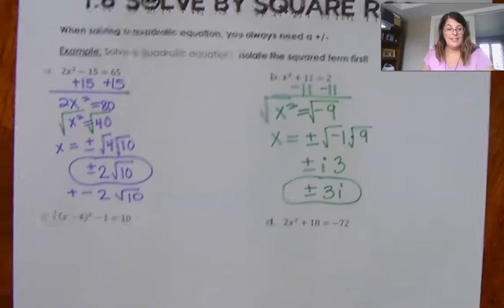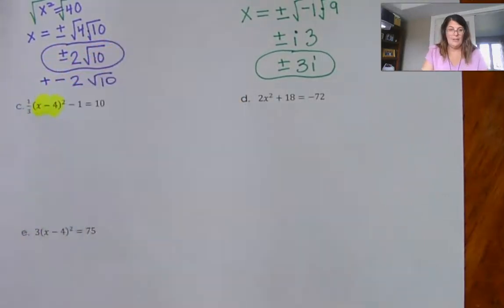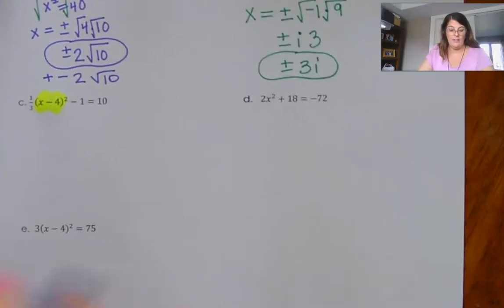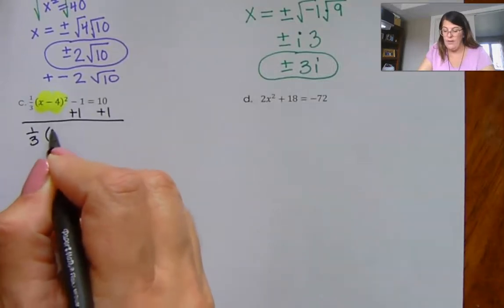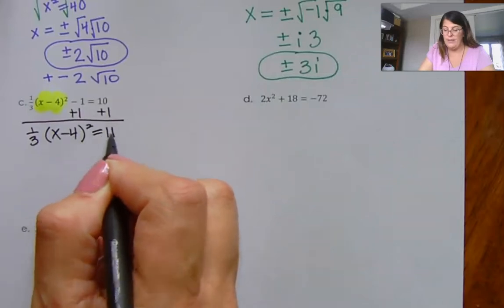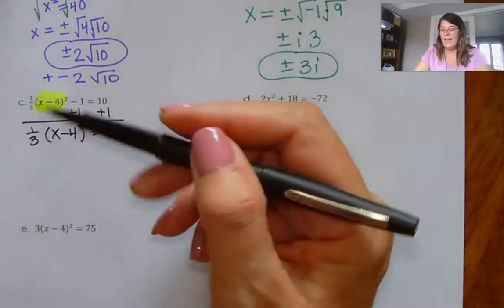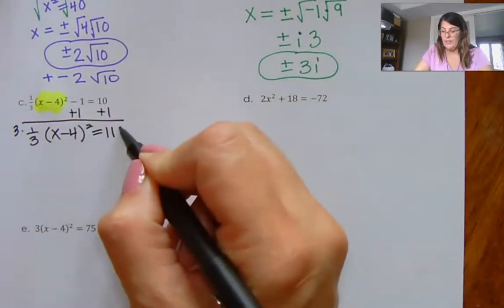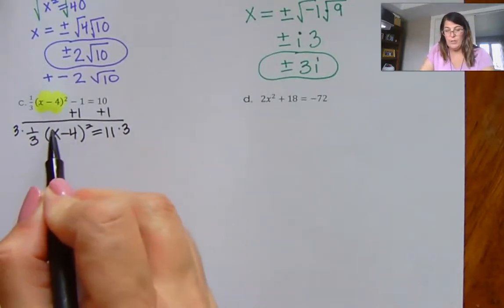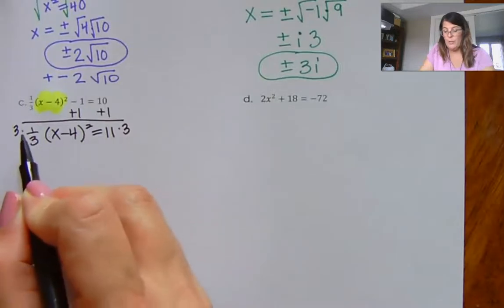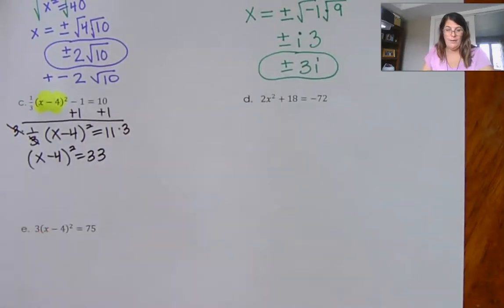For this next one, my goal is to get my x² thing alone first. I'm going to be solving for this x minus 4 — I want to get that (x-4)² all by itself. First, I'm going to add 1 to both sides, so I have one-third times (x-4)² is equal to 11. I don't want to take a square root with this one-third, so I'll get rid of that fraction by multiplying both sides by 3. That cancels, and I have (x-4)² is equal to 33.